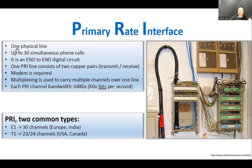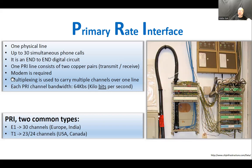Primary Rate Interface. It's one physical line but two pairs. Up to 30 simultaneous channels. There are two common PRI types: E1, which handles 30 channels and is used in Europe and India, and T1, used in North America, which depending on configuration can carry 23 or 24 channels. The E1 is a little better in volume but the channels may have slightly less bandwidth each.